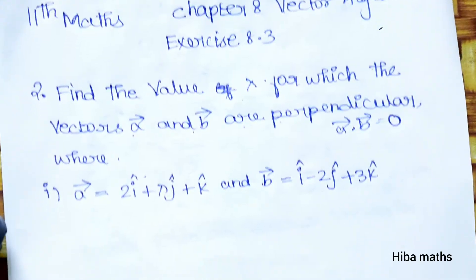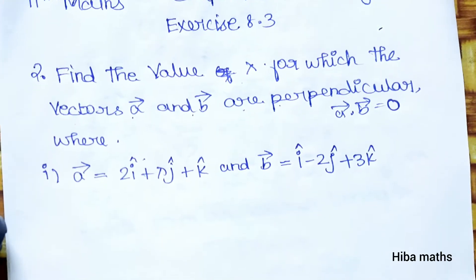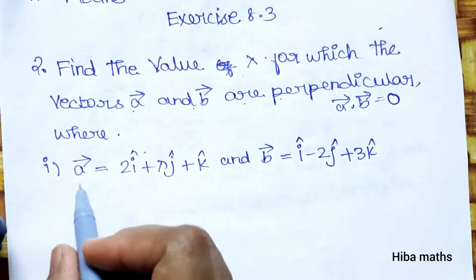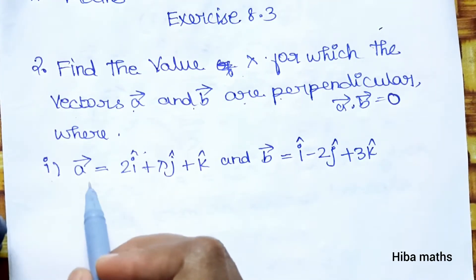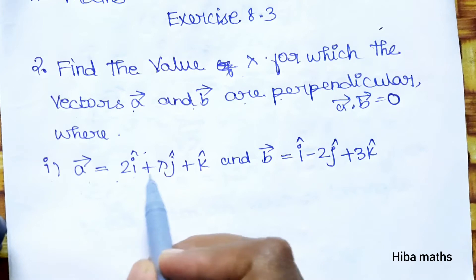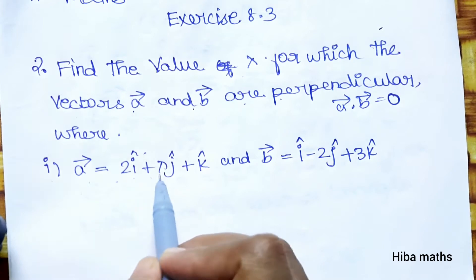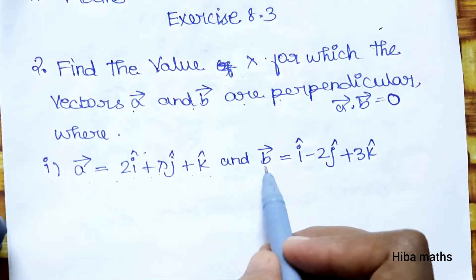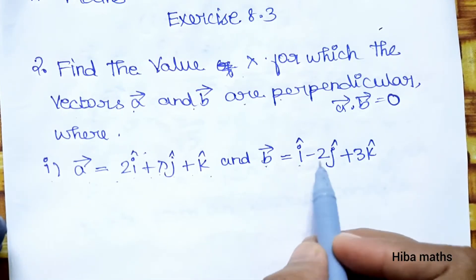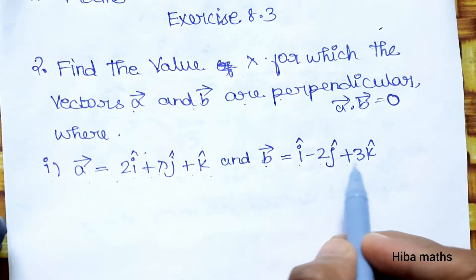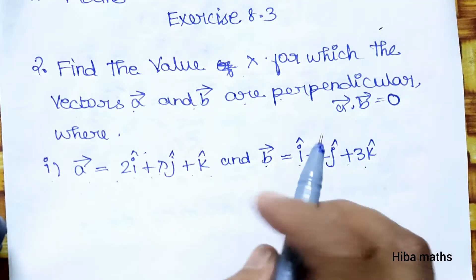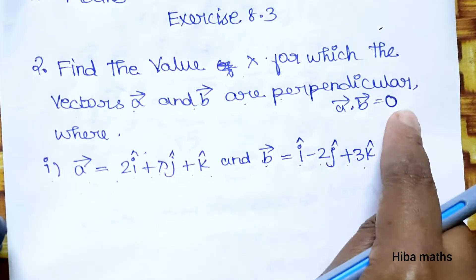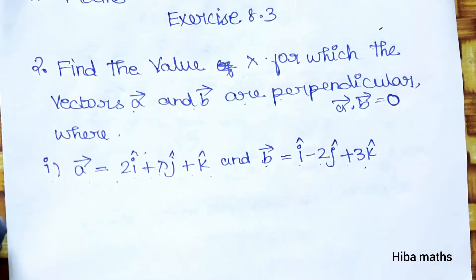We have 2 subdivisions to solve. First subdivision: vector a is equal to 2i plus lambda j plus k, and vector b is equal to i minus 2j plus 3k. If their dot product is 0, they are perpendicular.